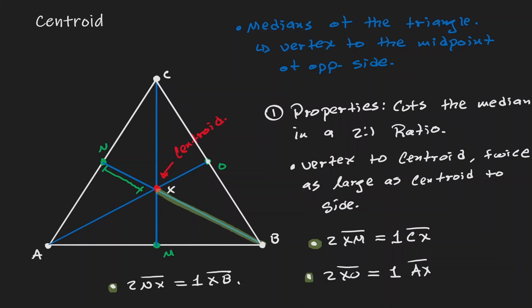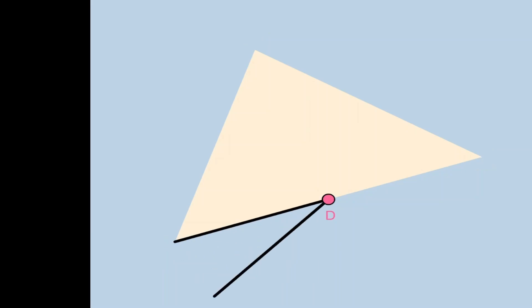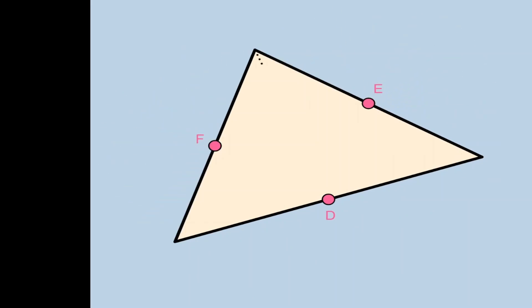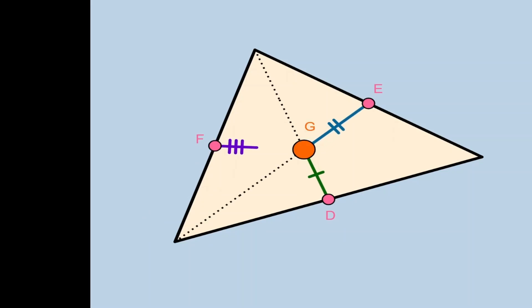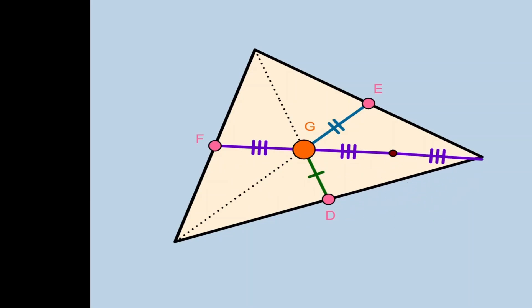Now let's show this in a small illustration. Here we have a random triangle with midpoints D, E, and F. Drawing all three medians, notice that the properties start to occur. Looking at the purple line from F to G — that segment is half the distance from G to the vertex. So the distance from the vertex to the centroid is twice as big as the distance from the centroid to F.